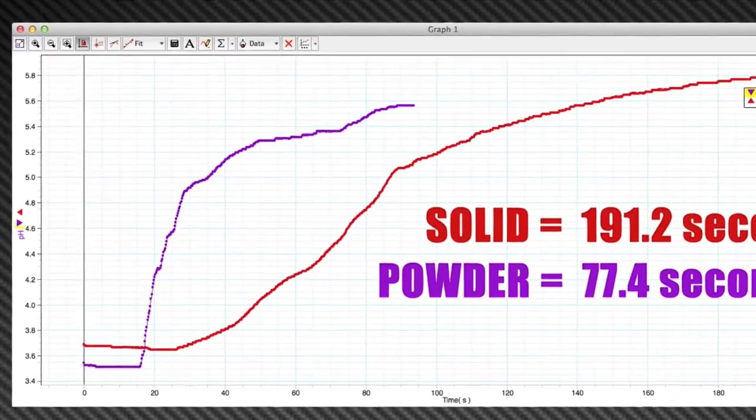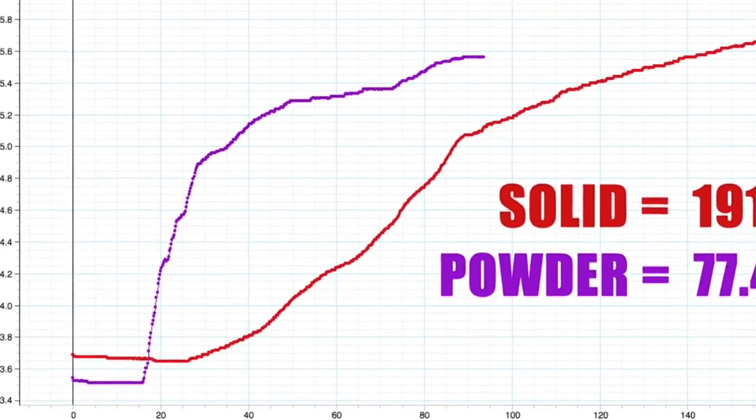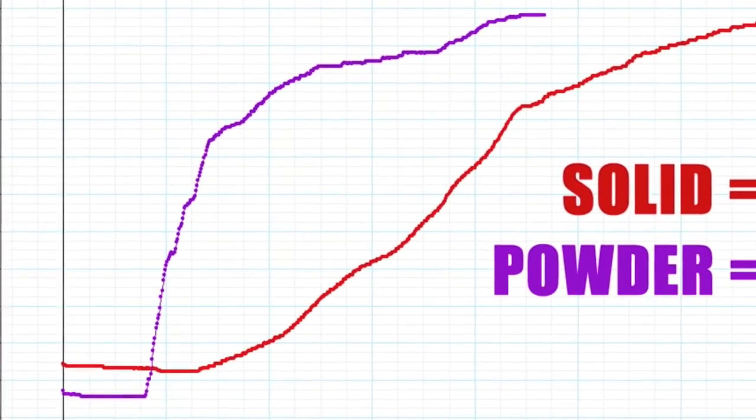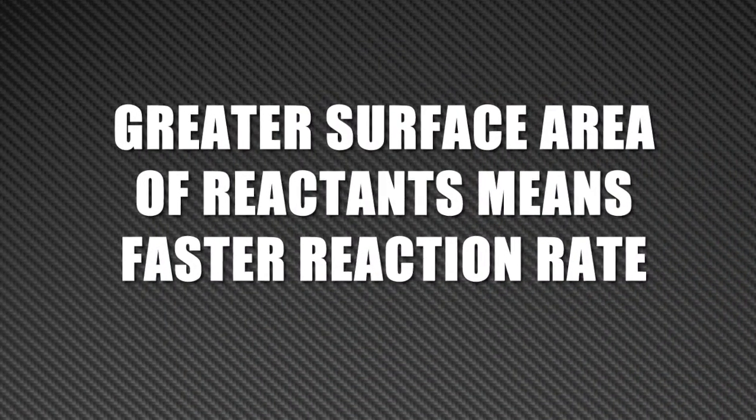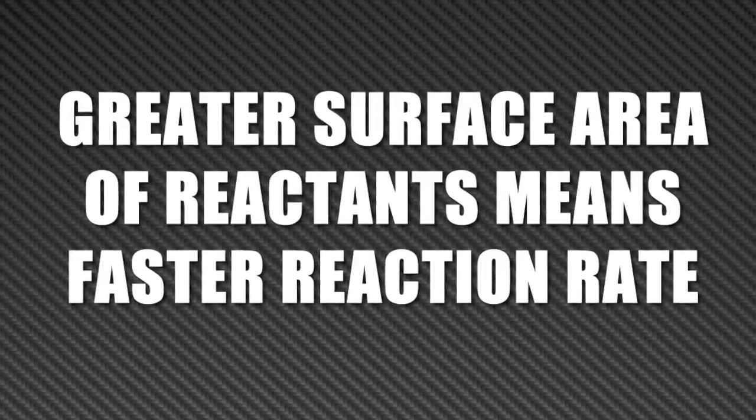you can see that the line representing the powdered Alka-Seltzer is much steeper than the solid Alka-Seltzer, meaning the reaction was occurring much more rapidly with the powder. This is great proof that increasing surface area of the reactants increases reaction rate.